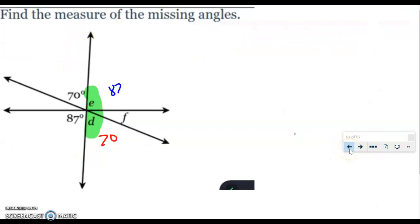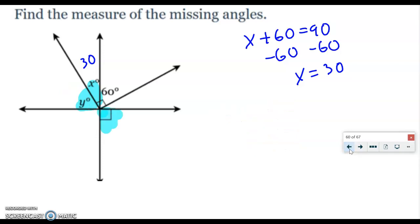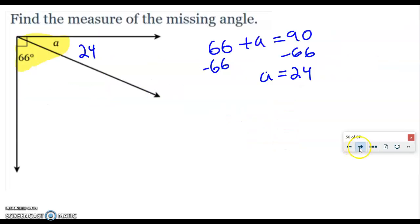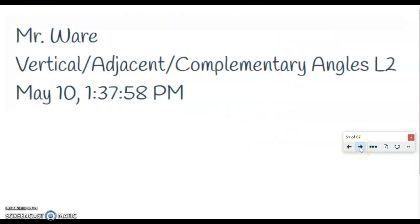Hello, thank you for checking out Mr. Ware's videos. Today we will be looking at vertical and adjacent complementary angles level two. We're going to look at some vertical angles, some supplementary angles, some complementary angles, and use those properties to find missing angles in different shapes. So let's take a look.